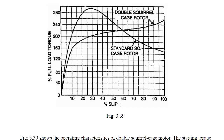This is the graphical representation of full load torque versus percentage slip. One graph is for the standard single cage squirrel cage rotor, and the other is for the double cage squirrel cage rotor. We can see that the starting torque is much higher in the double cage type compared to the standard squirrel cage rotor. This is the main advantage of the double cage construction — the disadvantage of low starting torque in the standard squirrel cage is overcome.